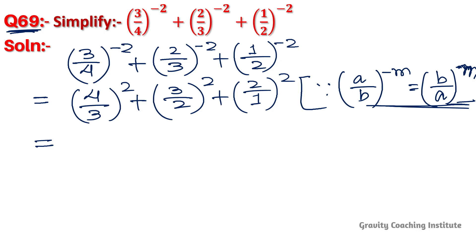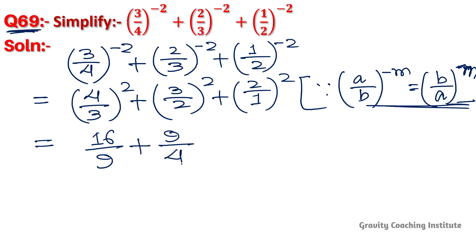Next, we expand using the formula. 4 by 3 squared gives 16 upon 9, then 9 upon 4, and then 4 upon 1.